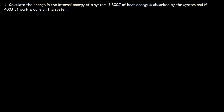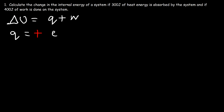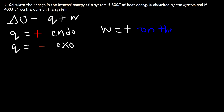In chemistry, delta U, the change in internal energy, is equal to Q plus W. In physics it's Q minus W. Q is positive whenever heat is absorbed by the system — that's during an endothermic process. Q is negative whenever heat is released by the system — that's during an exothermic process. W is positive whenever work is done on the system, so the internal energy goes up, and W is negative whenever work is done by the system, which decreases the internal energy.